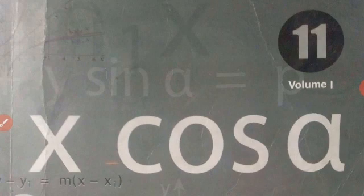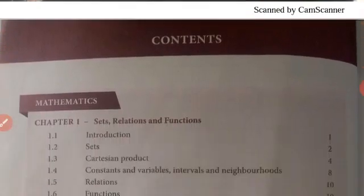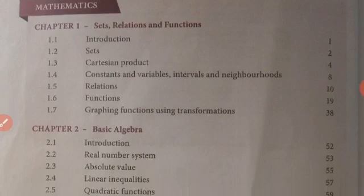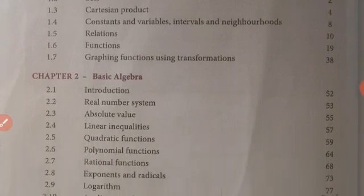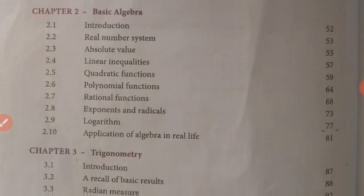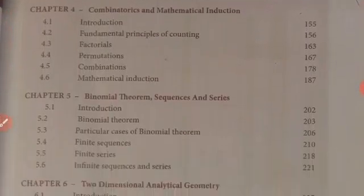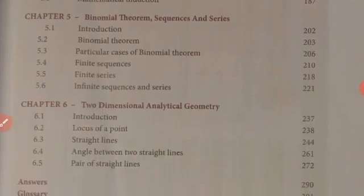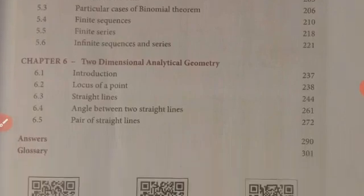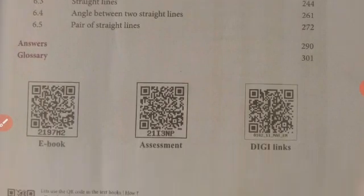Mathematics is important to our day-to-day life. Now going for 11th mathematics — in 11th mathematics there are 12 chapters containing two volumes. The chapter names are: first, Sets, Relations and Functions; second, Basic Algebra; third, Trigonometry; fourth, Combinatorics and Mathematical Induction; fifth, Binomial Theorem, Sequences and Series; sixth, Two-Dimensional Analytical Geometry.